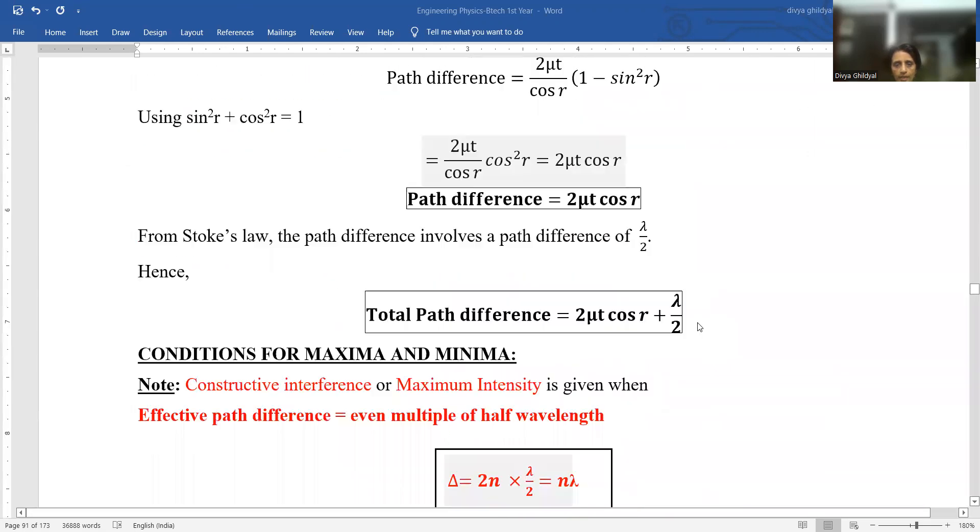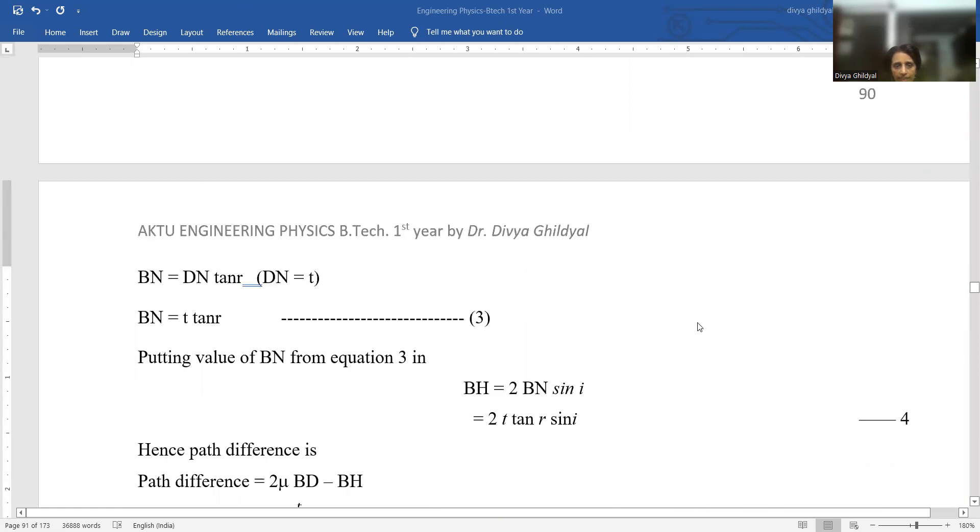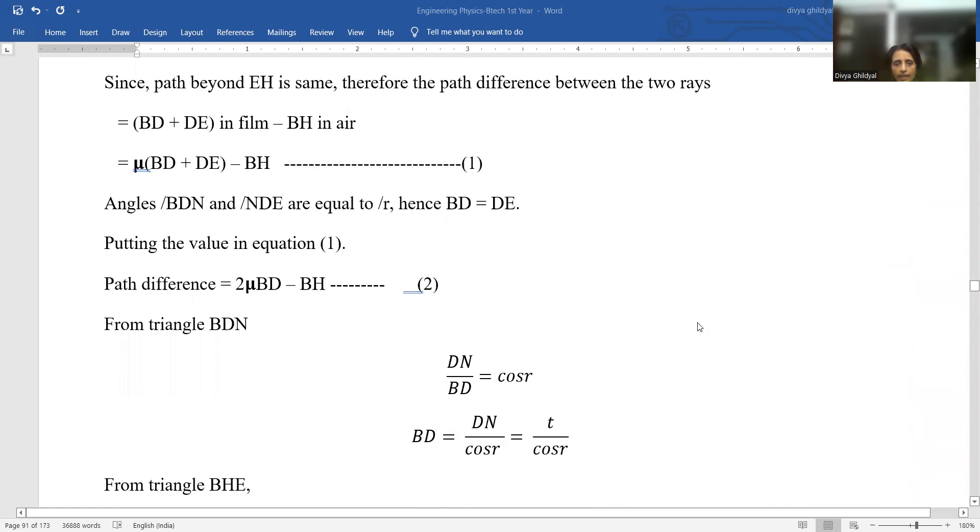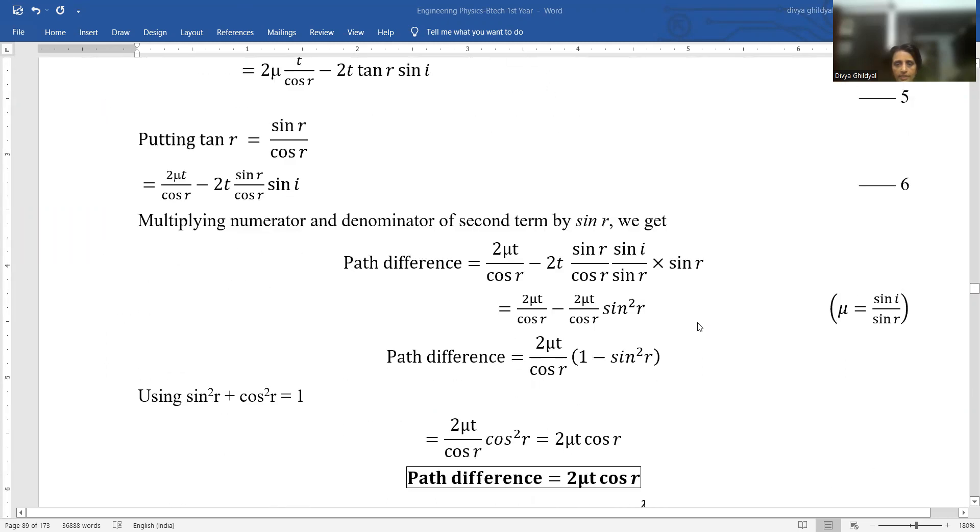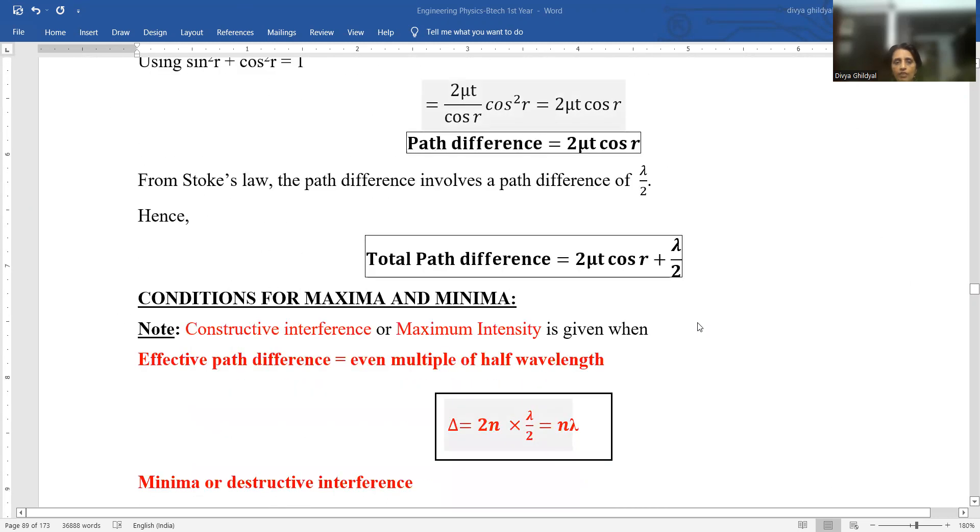whatever I told you step by step for reflected light, that very same similar pattern will be followed in transmitted light. But we will not consider Stokes law for transmitted light because Stokes law is considered only for reflected light.